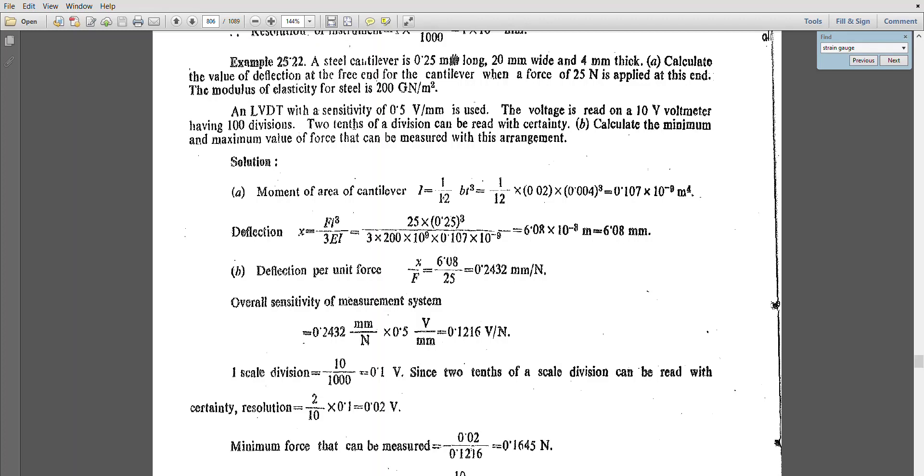Under divisions, two-tenths of the division can be read with certainty. Calculate the minimum and maximum values of force that can be measured with this arrangement. They are asking for the range. With the moment of inertia formulation, you can find that I equals 1 by 12 btq, which from the question is 0.107 into 10 power minus 9 meter power 4.